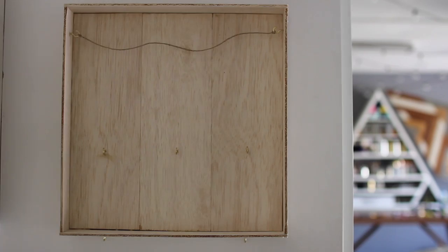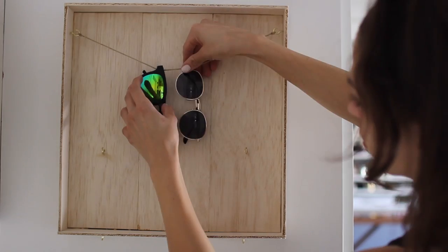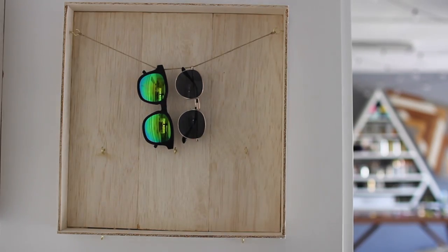I also added two more eye hooks to the bottom of the holder for Callie's leash and there you guys have it. A super simple minimalistic super cute key and sunglass holder.